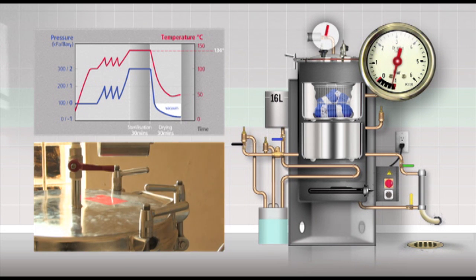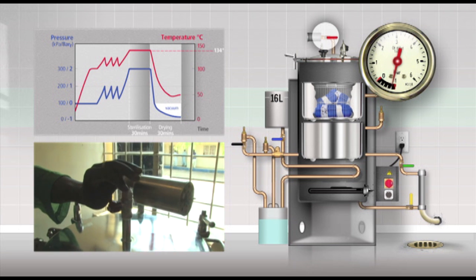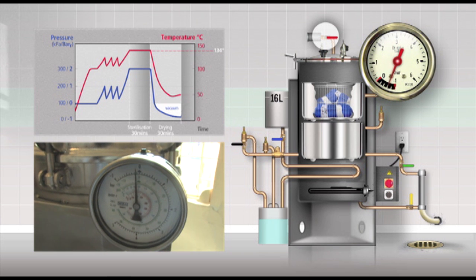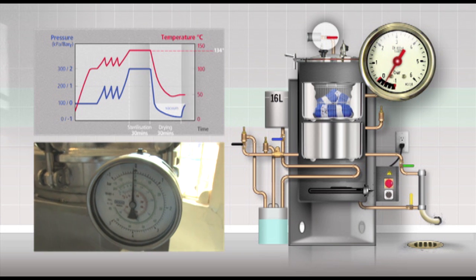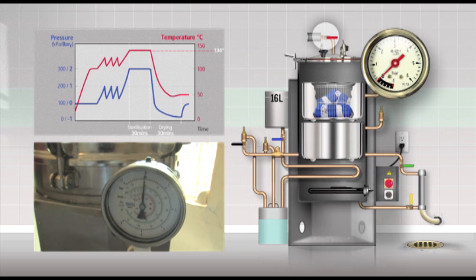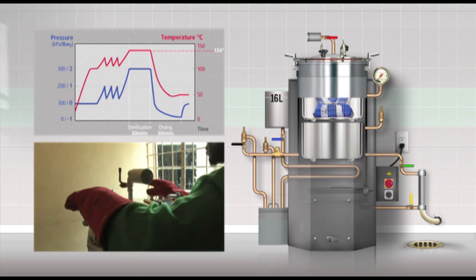Now open the red valve on top of the lid, the air admission valve. Air will enter the chamber and the pressure will increase to atmospheric pressure. The pressure gauge should show 0 bar.